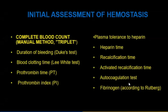Initial assessment of hemostasis includes complete blood count, manual method, triplet, duration of bleeding, blood clotting time, prothrombin time, prothrombin index, plasma tolerance to heparin, heparin time, recalcification time, activated recalcification time, and auto-coagulation test.